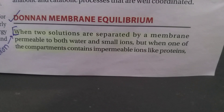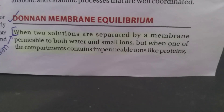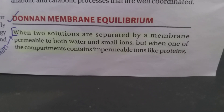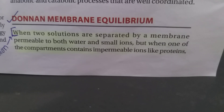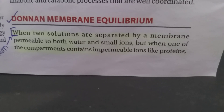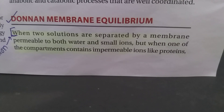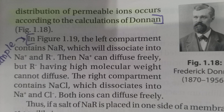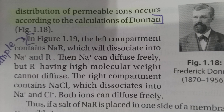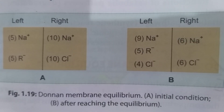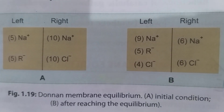Let's begin with the definition of the Donnan membrane equilibrium. When two solutions are separated by a membrane permeable to both water and small ions, but when one of the compartments contains impermeable ions like proteins, distribution of permeable ions occurs according to the calculations of Donnan.